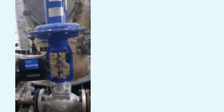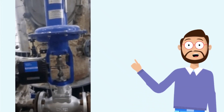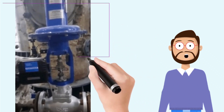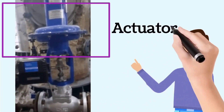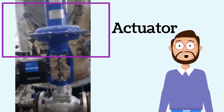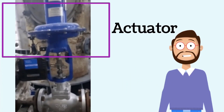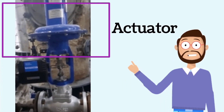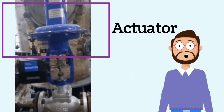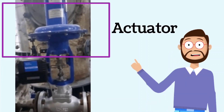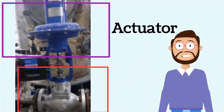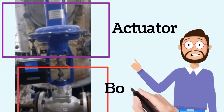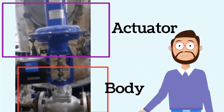In the control valve image, two rectangles are shown. The upper rectangle represents the actuator, which serves to operate the control valve and plays the most important role in its operation. The lower rectangle is called the body or valve body, through which the flow of fluid passes.